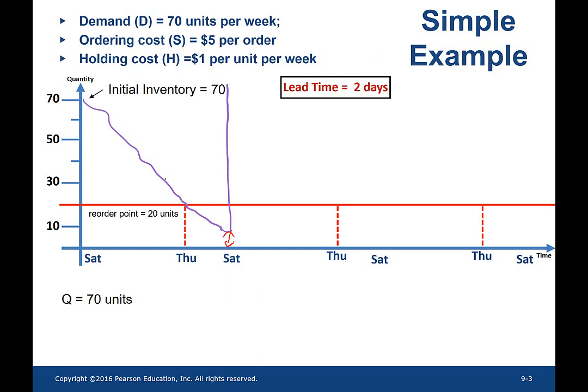The next week, the demand is higher and the slope is steeper. As a result, the buyer runs out of inventory before the order arrives. Clearly, since the demand is variable, demand in one week can be higher or lower than the next week. As a result, the buyer may or may not run out of products during the lead time.